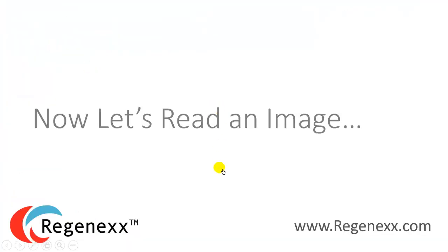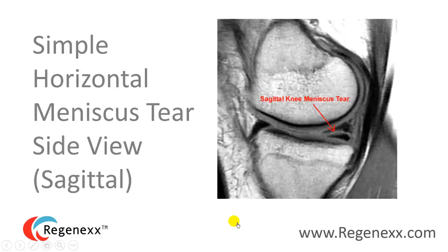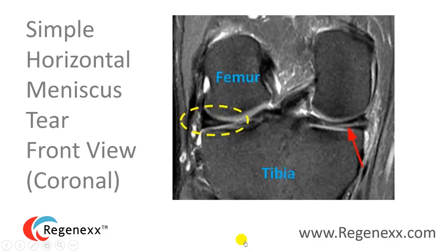Now let's look at what some abnormal meniscus tissue looks like. This is an example of a simple horizontal meniscus tear — you can see a horizontal light line in the dark triangle on the sagittal image, where the bone is bright, cartilage is gray, and the meniscus is dark. On the coronal view, the red arrow points to a white line that goes all the way through the meniscus. A normal meniscus is uniformly dark; this white line means a tear.